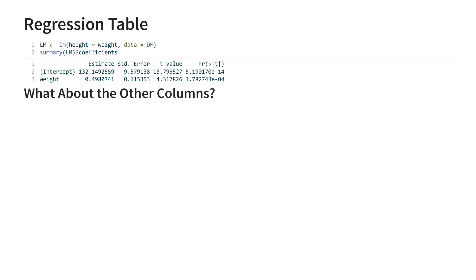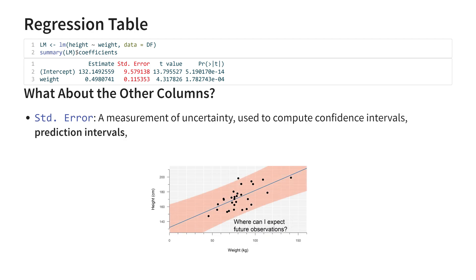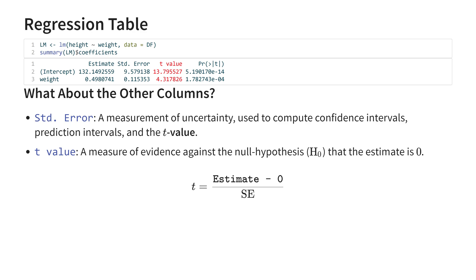So what about the rest of the table? Next to the estimates, we see their standard errors. This is the uncertainty of the estimates. It is used to compute confidence intervals, which show you a plausible range of values for the regression line, prediction intervals, which show you where to expect observations, and the t-value, which is also shown in the third column. The t-value is a measure of how rare this result would be under the null hypothesis, which states that the true value for this parameter is zero.